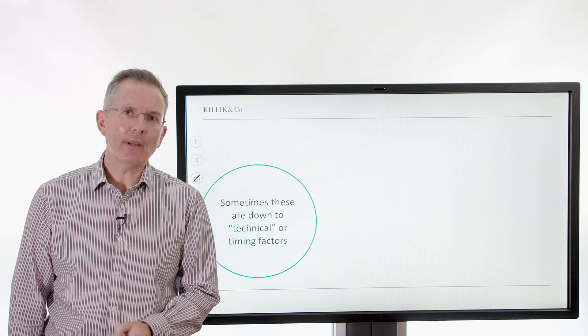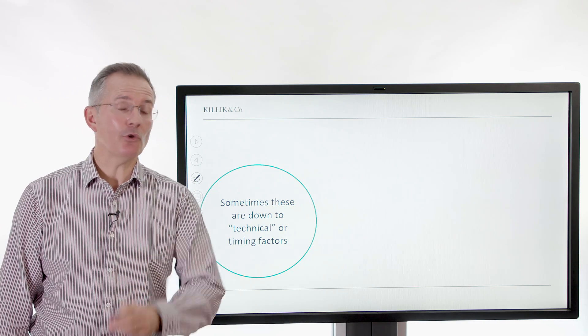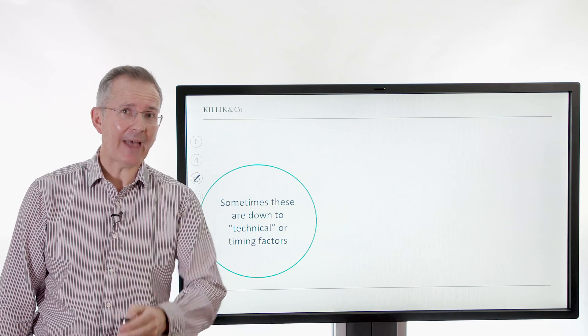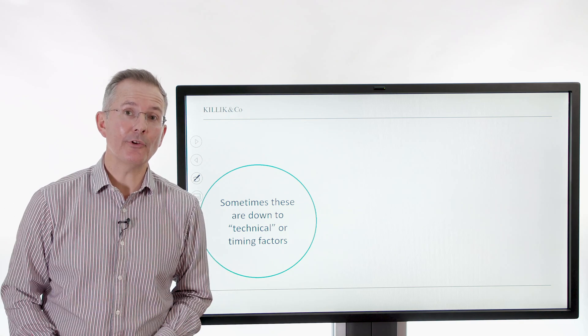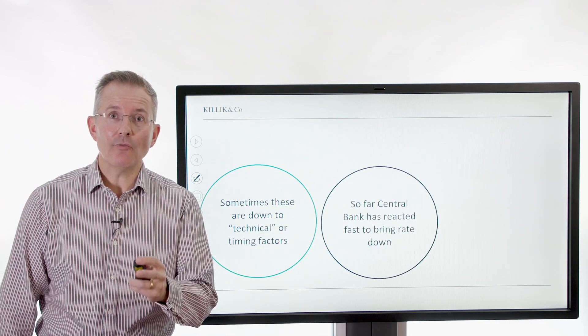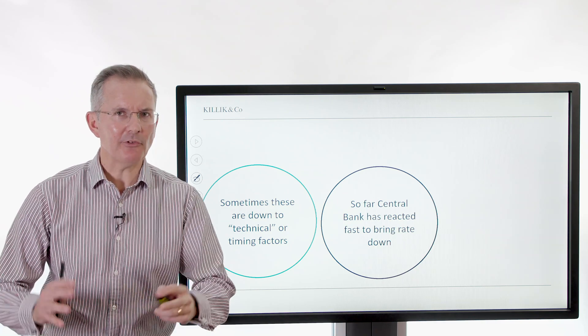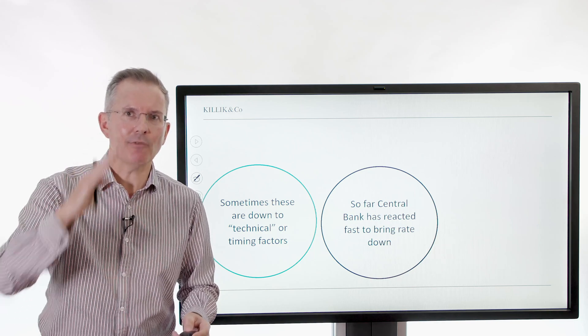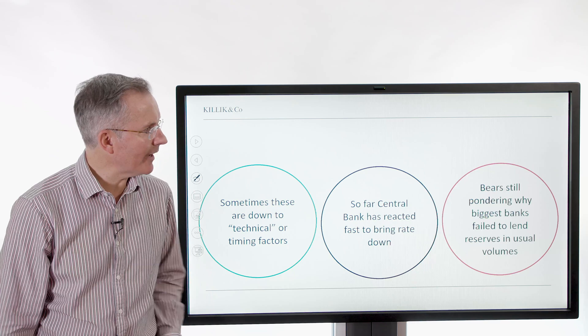Now, people are still trying to work this out. So some people are saying, don't worry. What happened last month is down to technical timing factors to do with tax receipts, bond issuance, and the activities of the Fed in terms of trying to unwind quantitative easing, as it's known. So far, the central banks managed to react quickly to bring the rate down. So people are saying no need to worry, because what the Fed did was intervene and the rate may have spiked as people panicked, if you like, about a potential lack of liquidity and then came down very quickly on Fed intervention.